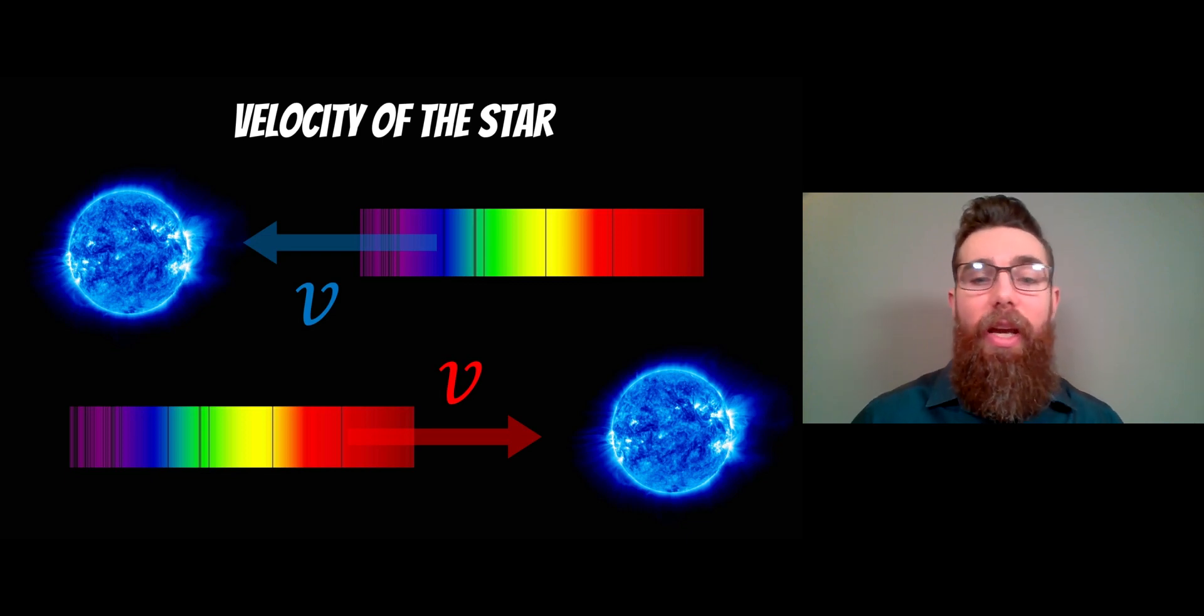As it travels away from us it becomes red shifted, the light becomes slightly redder, and as it travels towards us it becomes slightly bluer so it's blue shifted. And we look at these spectral lines to figure out how fast it's actually moving.